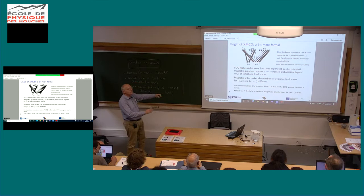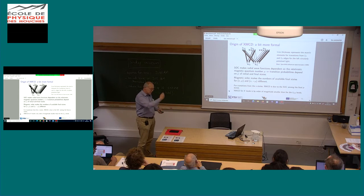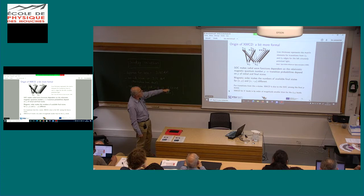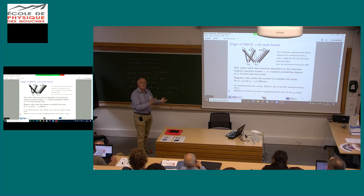More formally: spin-orbit coupling means that the relativistic wave function depends on κ and μ, and the transition probabilities depend on this μ — a relativistic analog of the magnetic quantum number — of both initial and final states. The magnetic order means that you have different numbers of available final states. This is how XMCD is actually calculated; there is a schematic depiction of the intensities for various transitions which differ for left and right circular polarization.